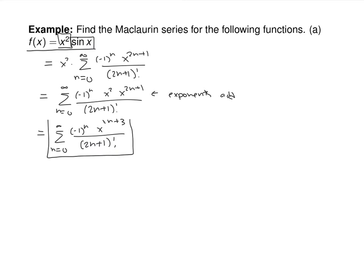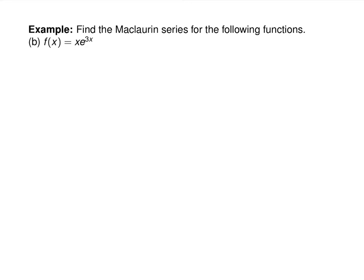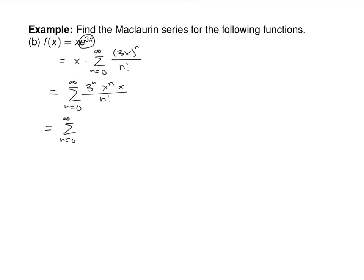You'd find the same thing doing repeated derivatives, but it's much easier to use your known series and multiply by x squared. Similarly, for e to the 3x instead of e to the x, you can just input 3x for x in the Maclaurin series for e to the x. That gives x times the sum from n equals 0 to infinity of 3x to the n over n factorial, which equals the sum from n equals 0 to infinity of 3 to the n times x to the n plus 1 over n factorial.